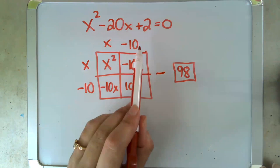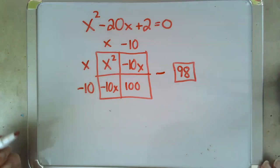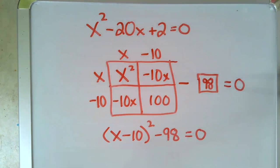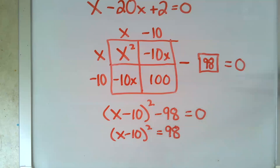So x minus 10 times x minus 10, or x minus 10 squared minus 98 equals 0. And now we continue to solve. So to continue to solve, I add 98 to both sides. Now I need to undo a square. And to do that, I square root. And I remember that when I square root, I create a plus or a minus.